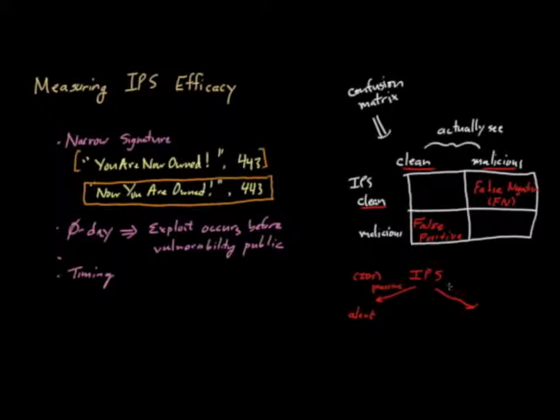And the other mode is what's called active mode or blocking mode. In active mode, when you do notice something that you think is malicious, the IPS will actually go ahead and block that traffic flow, so it results in an actual block as opposed to just an alert.